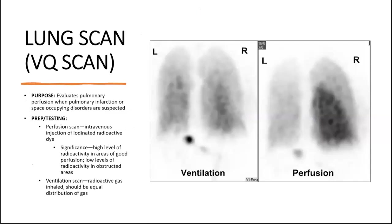A ventilation and perfusion lung scan is most often done to detect a pulmonary embolus — a blood clot in the lungs. It can also detect abnormal circulation like shunts in the blood vessels of the lungs, examining pulmonary vasculature for abnormalities. A perfusion scan involves intravenous injection of iodinated radioactive dye to measure blood supply through the lungs, looking for high levels of radioactivity in areas of good perfusion and low levels in obstructed areas.